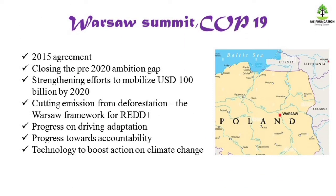COP-19 is the Warsaw Summit, held in Poland. A 2015 agreement was developed with a timeline. The goal was to close the ambition gap by 2020 and implement an agreement in 2020. The target was to limit temperature to 2 degrees Celsius. Under the Kyoto Protocol, there is a Clean Development Mechanism with certified emission reductions.